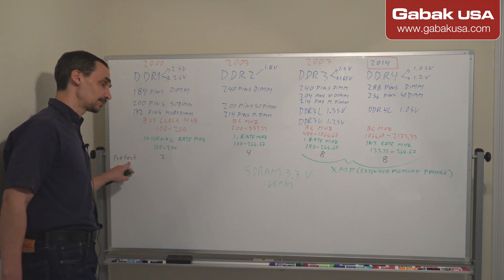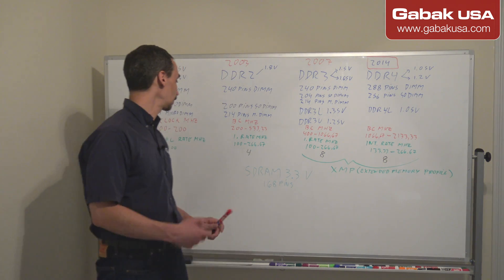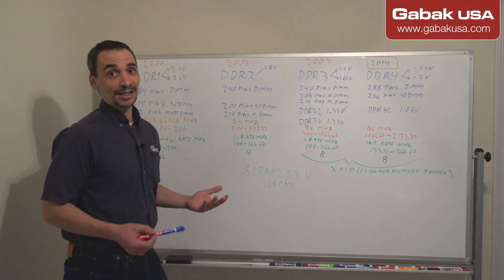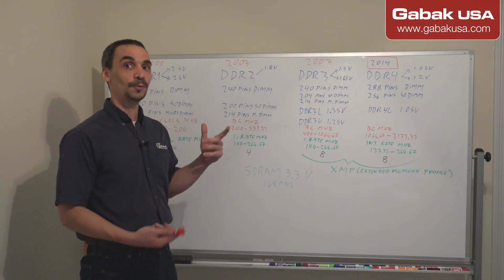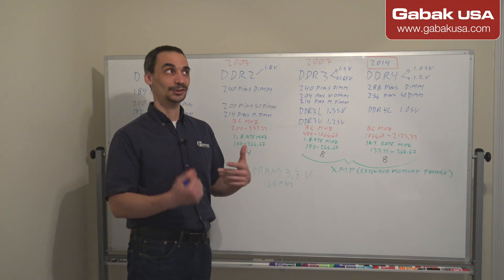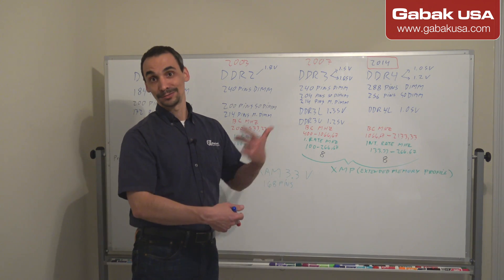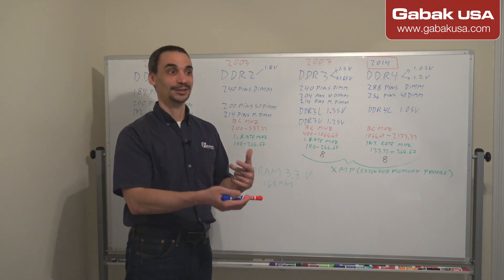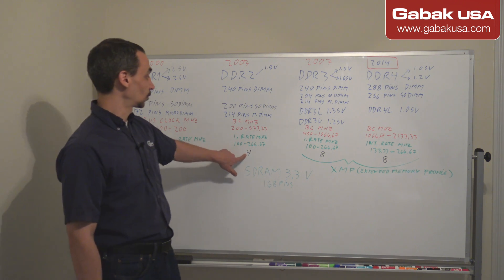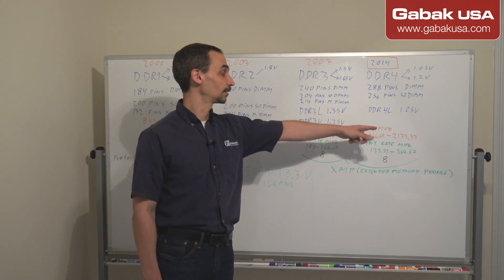Another very important feature is prefetch, which works kind of like a cache. Prefetch tries to predict what data the memory is going to need before it is actually needed, so it can provide it faster than fetching without it. DDR1 has a prefetch of 2n, DDR2 is 4n, and DDR3 and DDR4 are both 8n.